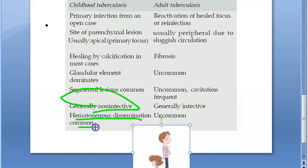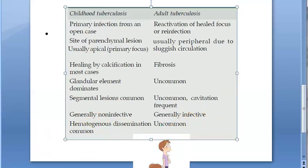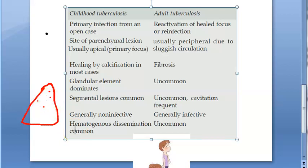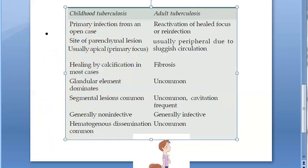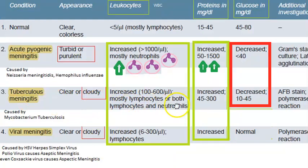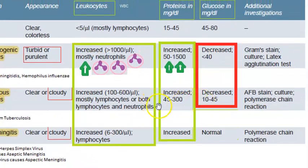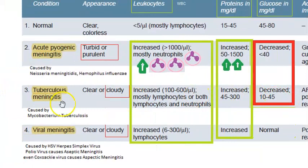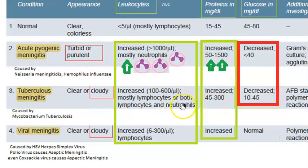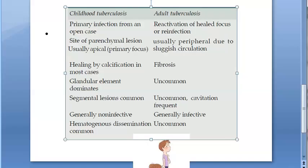Hematogenous dissemination is common in children — spread via the blood. Via hematogenous spread there can be miliary tuberculosis — extensive miliary mottling of the lung. Then the brain can be affected, causing meningitis and tuberculoma. In TB meningitis, the CSF becomes cloudy with more lymphocytes or neutrophils, higher protein, slightly lower glucose, and AFB staining positive.